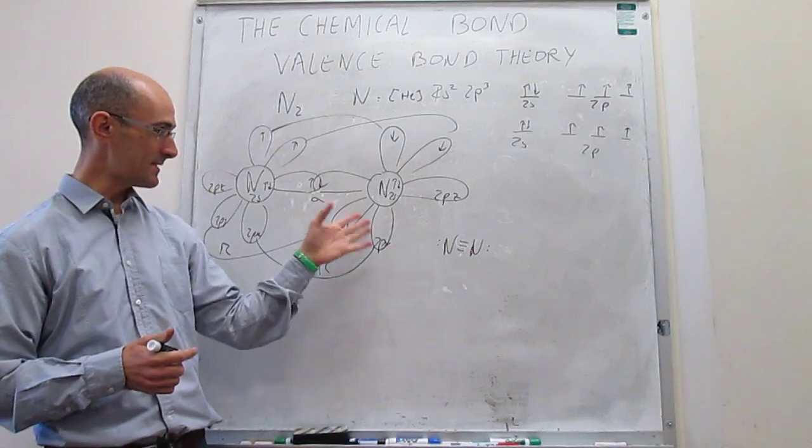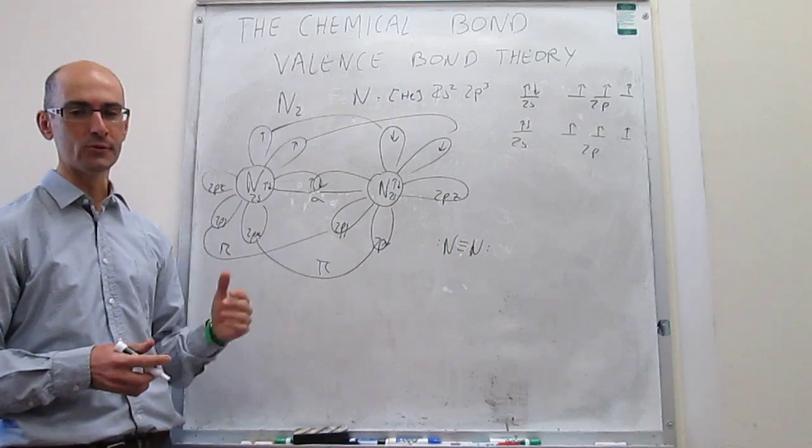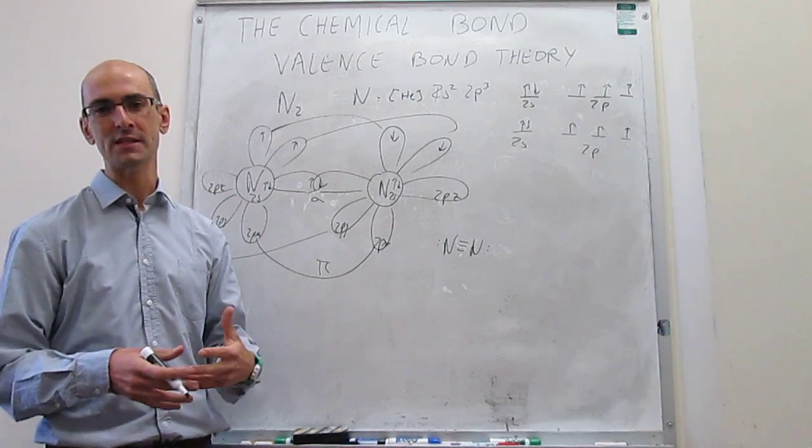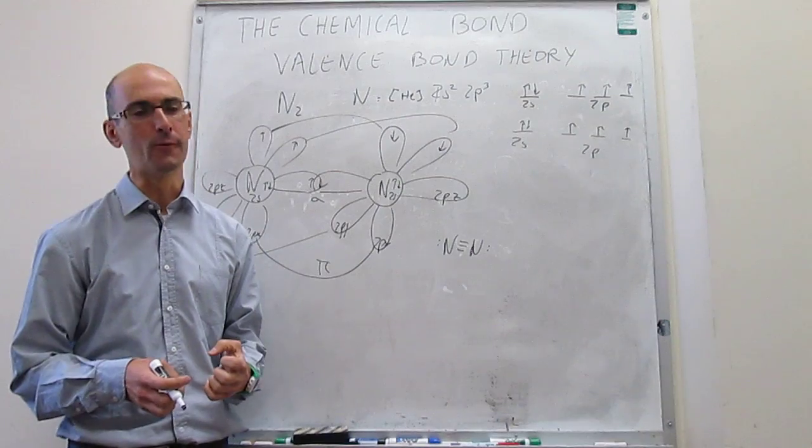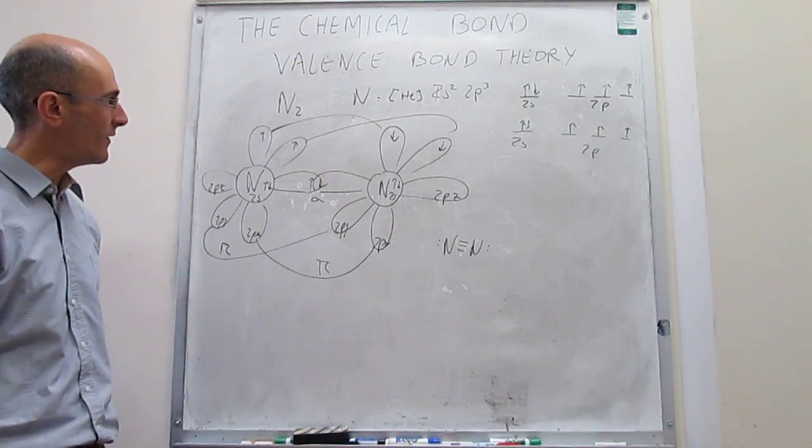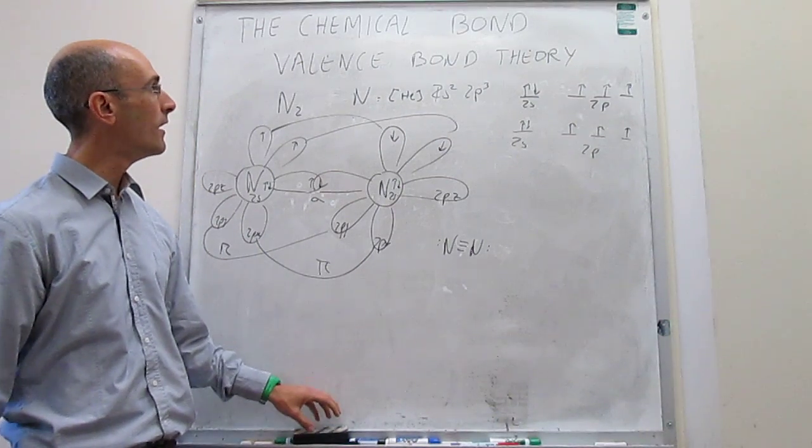So that triple bond does exist, or it seems to be captured also by valence bond theory, but you have much more nuance to this than before. So that is the N2 diagram for valence bond theory.